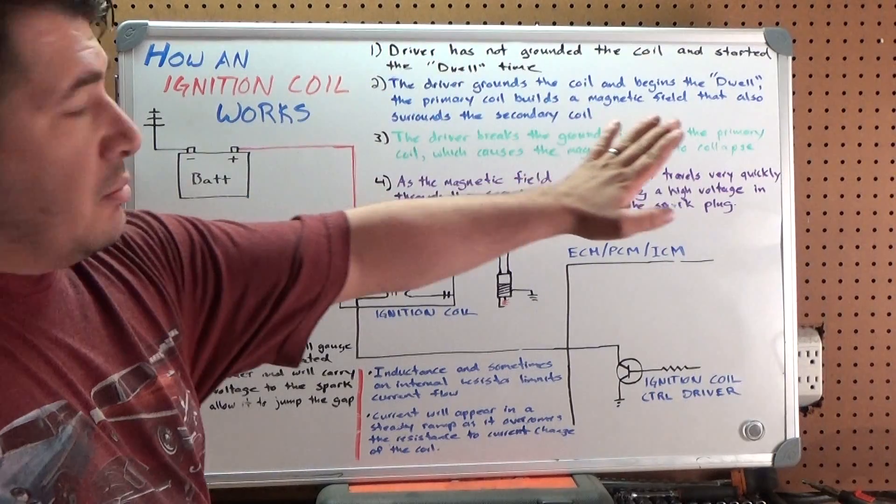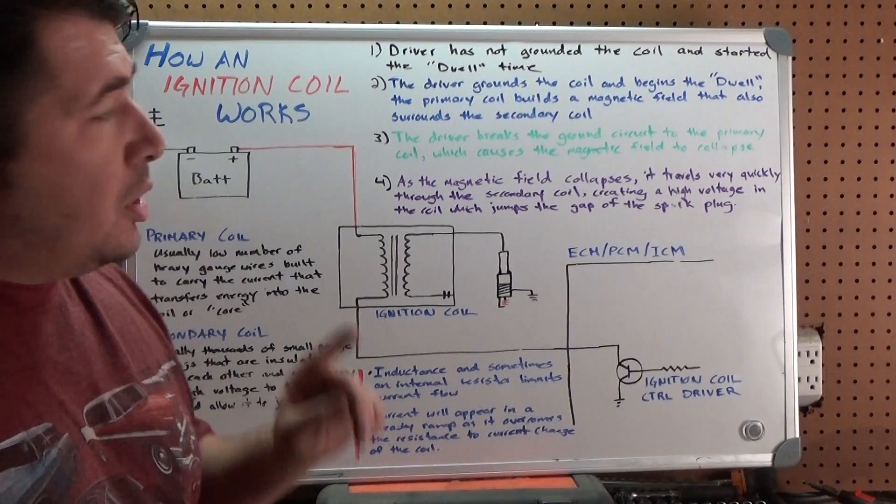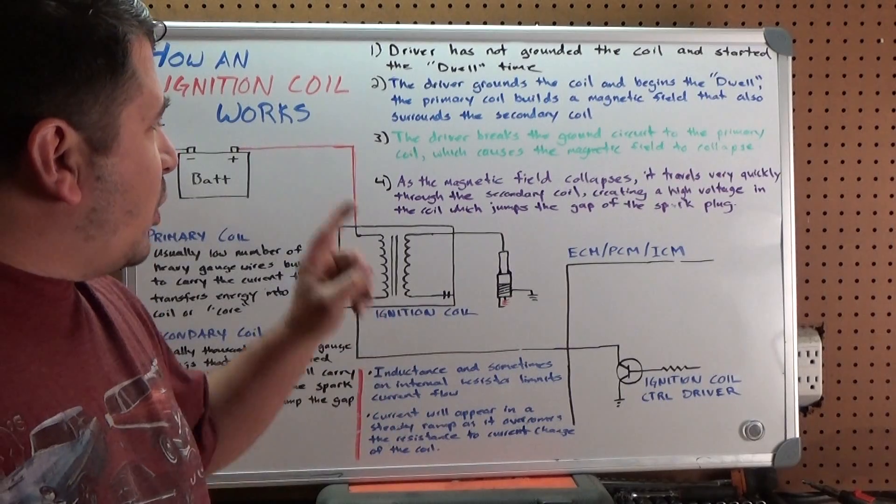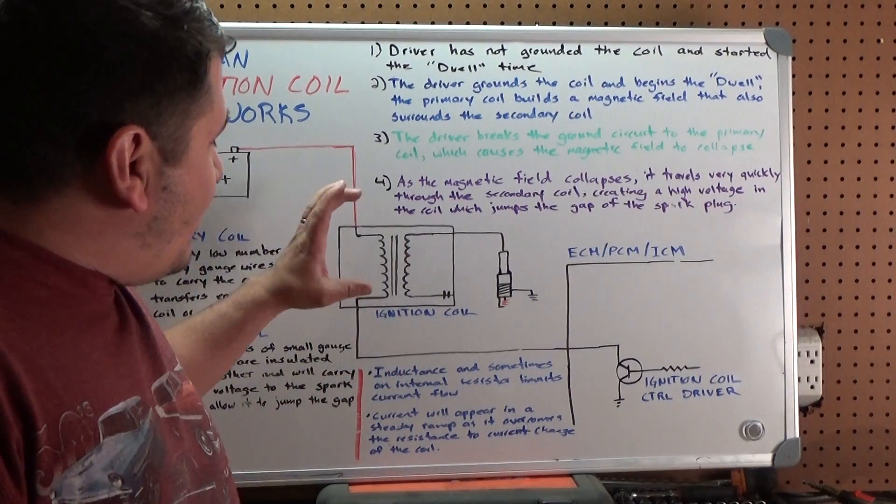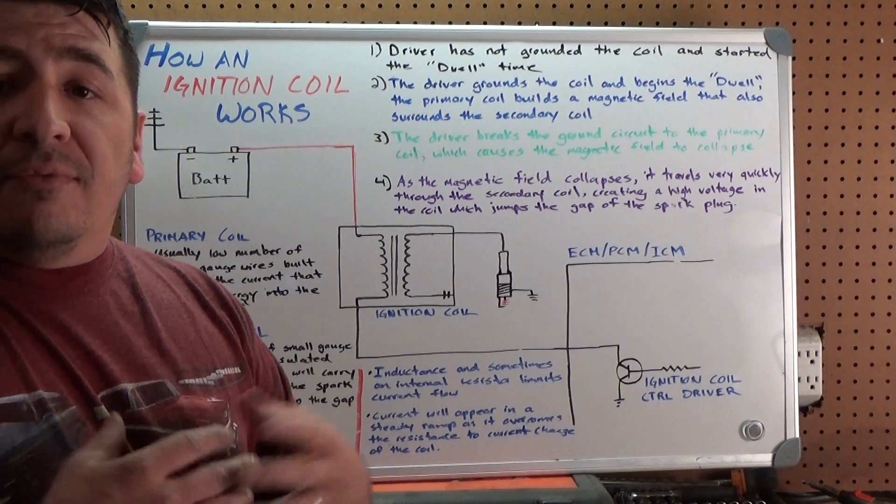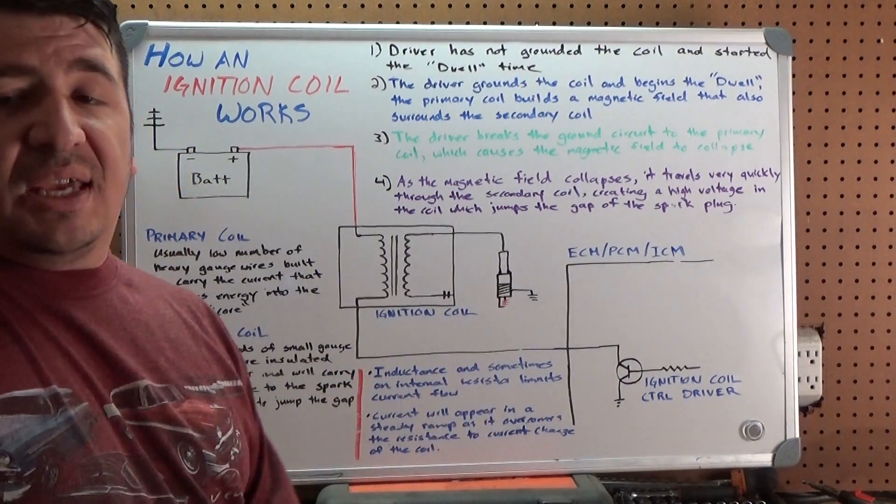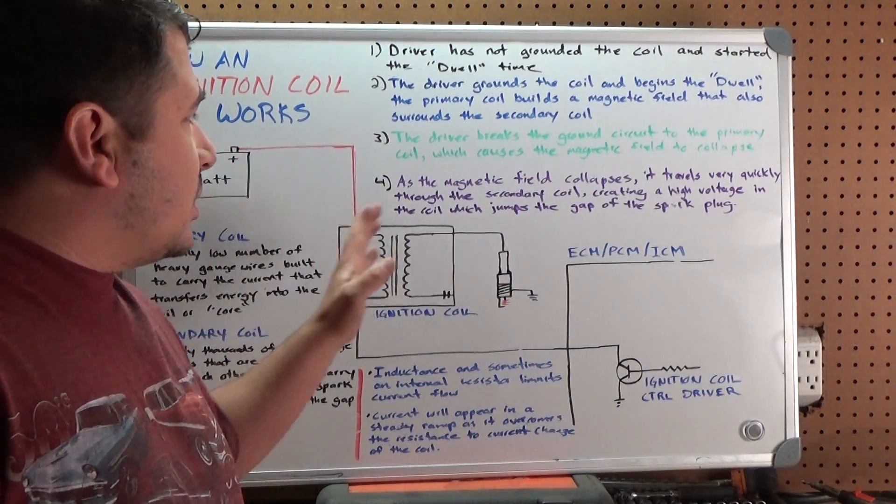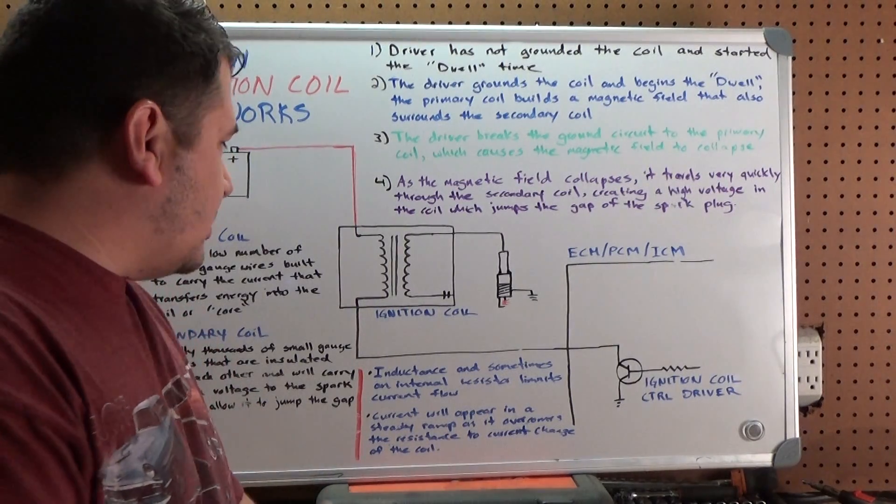Now that we've got the magnetic field built, the stage is set to create our high voltage. All we have to do is shut the switch off. The driver breaks the ground circuit to the primary coil, which causes the magnetic field to collapse. That's the key thing here, because now that magnetic field is going to collapse across the secondary coil, generating voltage in all of the windings of the coil and creating the high-voltage spark that jumps the gap in the spark plug.